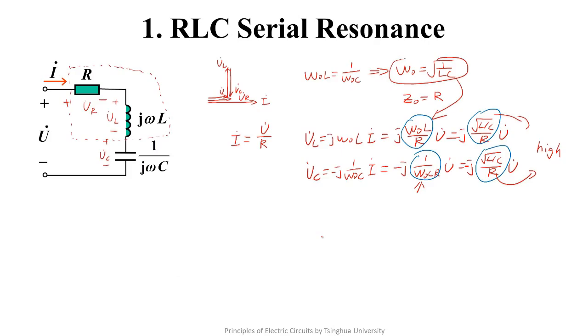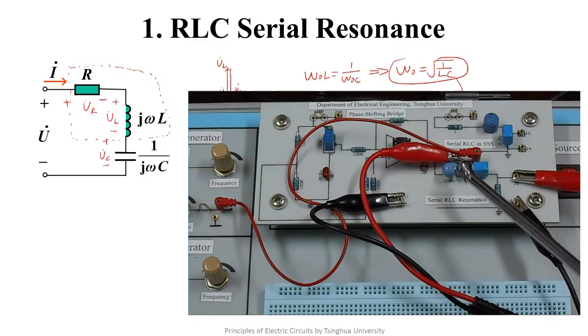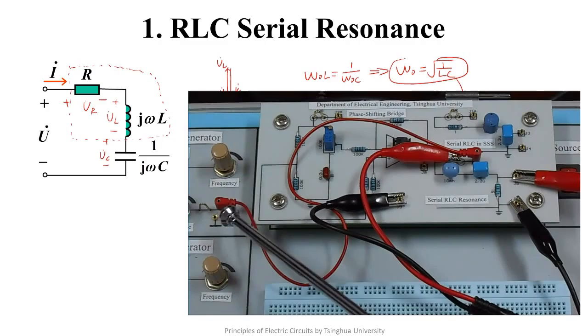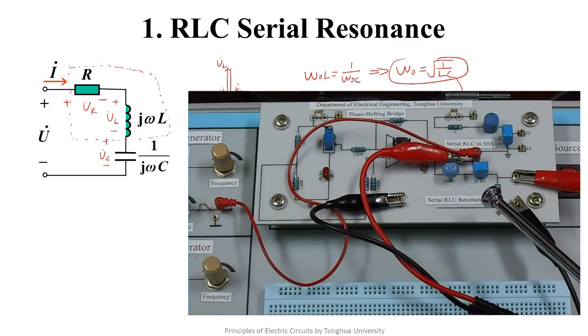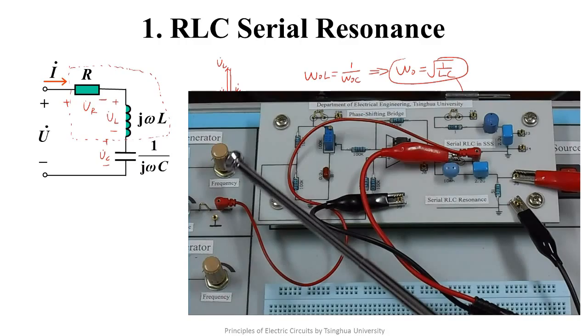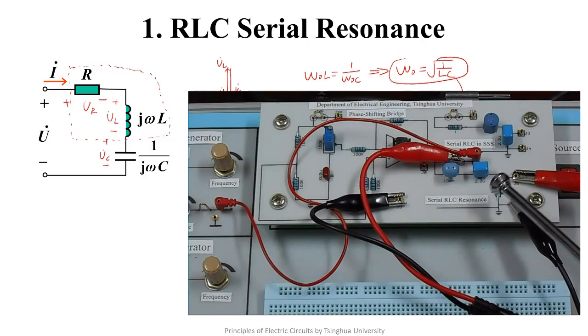If this is the parasitic resistor of the inductor, its resistance will be very small. In this condition, the energy storage elements will get high voltages. In other words, the energy storage elements in serial RLC resonance may have higher voltages than the port. So RLC serial resonance is also called the voltage resonance.